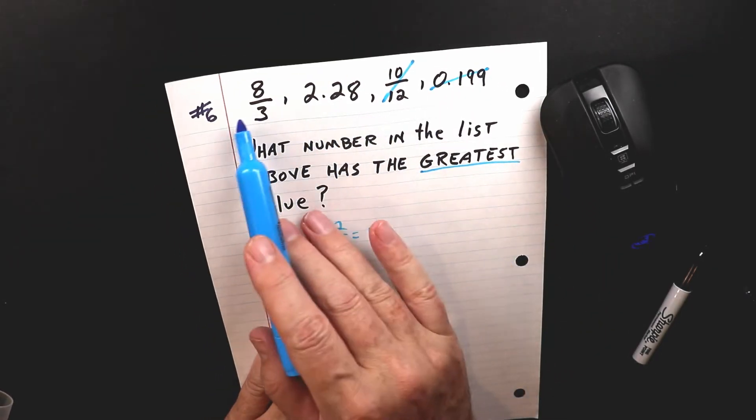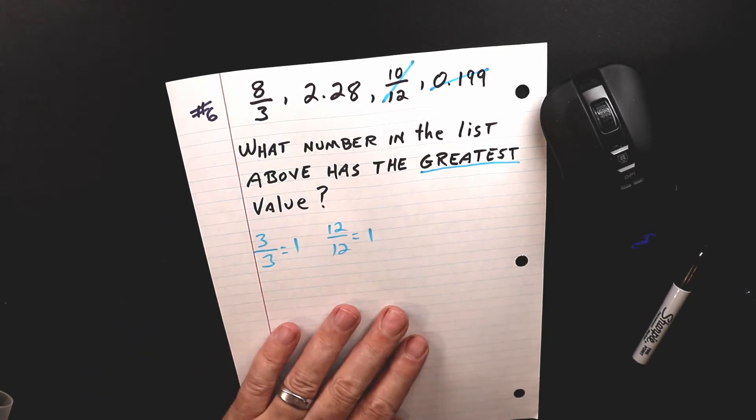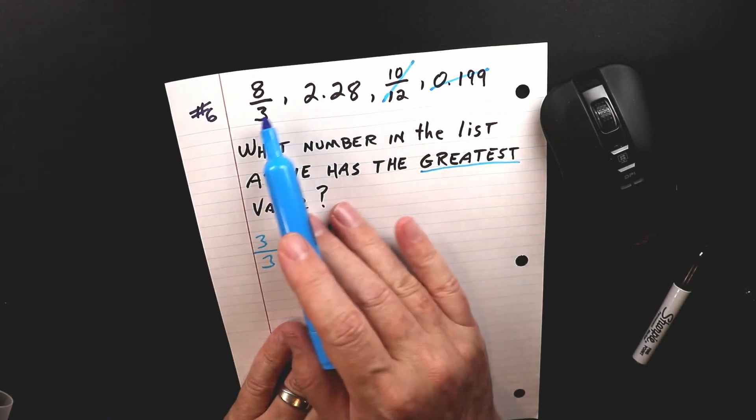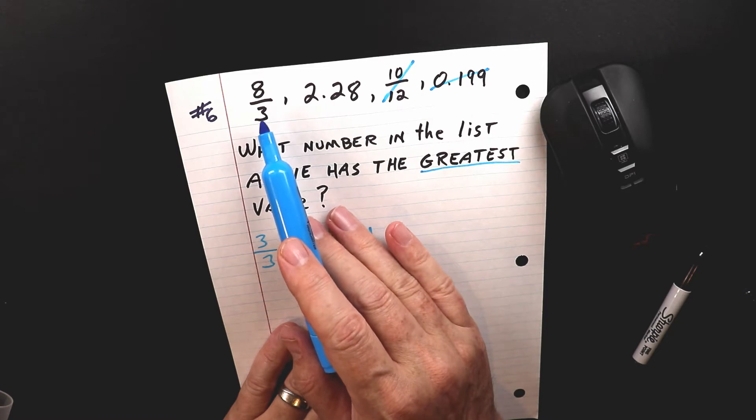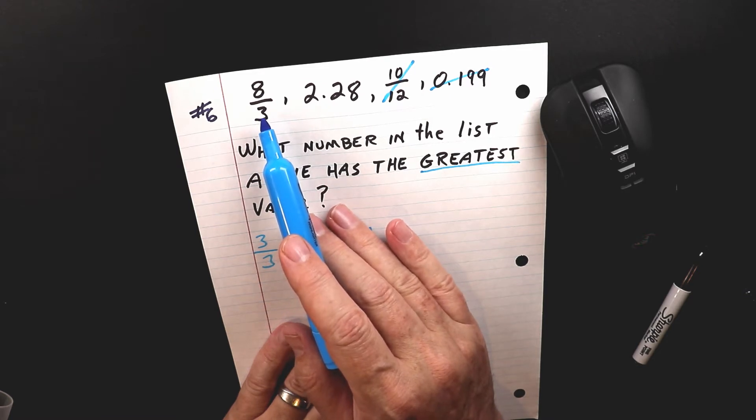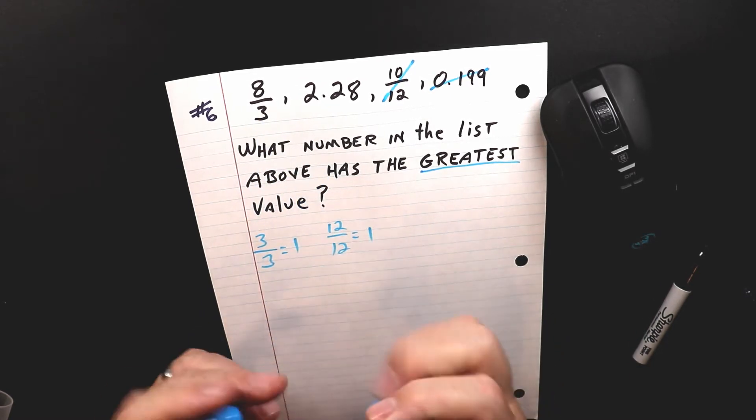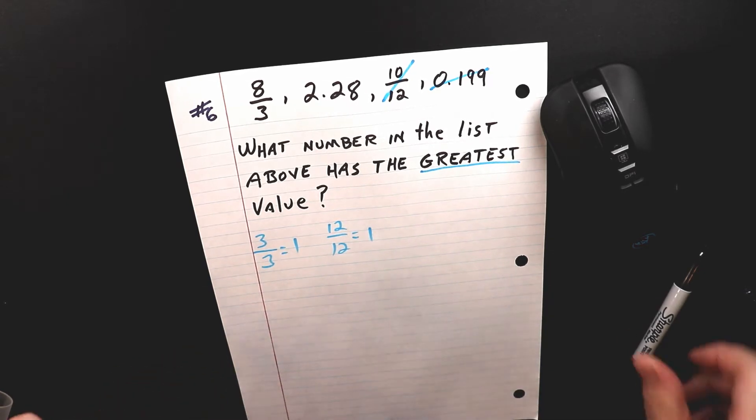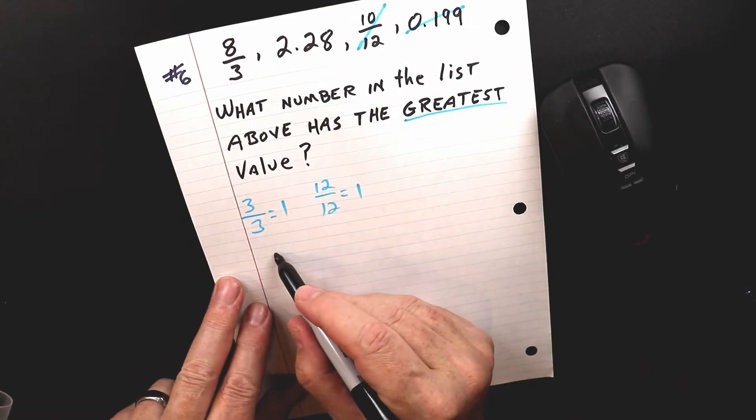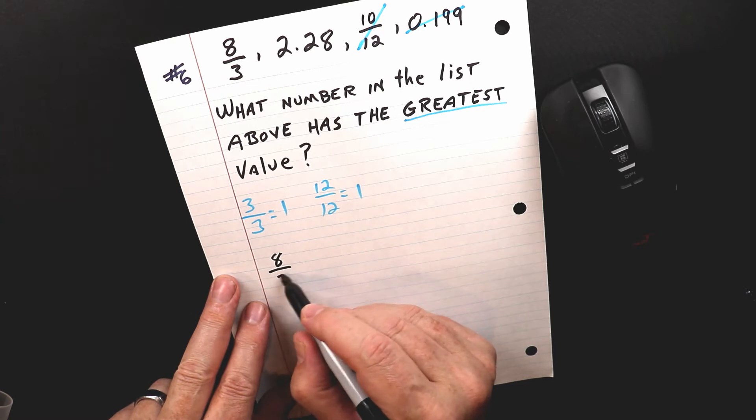So we've eliminated these two. That means we only have these two numbers that we really need to think about. So what we're going to do is figure out what this number is when it's not in a fraction. I'm going to convert that into a decimal. So we have 8 over 3.